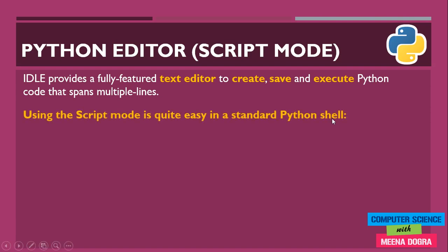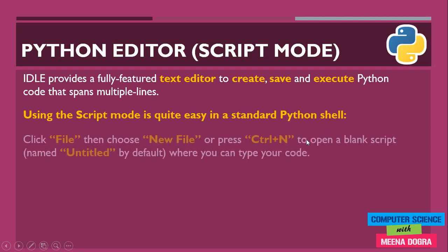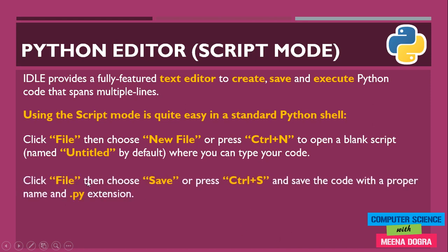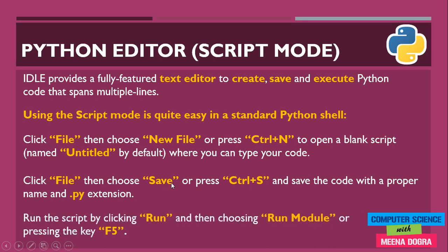Using script mode is quite easy in Python IDLE. You click on the File menu and choose the option 'New File', or use the shortcut Ctrl+N, to open a blank script which will be named 'Untitled' by default. After typing your code, you save the file using 'Save' from the File menu or Ctrl+S, and save it with the .py extension — Python will provide the extension if you don't. After saving, you run it using the 'Run Module' option from the Run menu or press the F5 key.